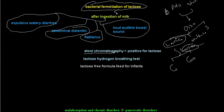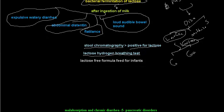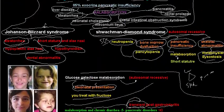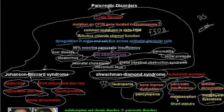To diagnose lactase deficiency: stool chromatography will be positive for lactose, and the lactose hydrogen breath test will detect carbohydrate malabsorption. Stool reducing substances will also be positive for lactose. Treatment involves giving a lactose-free formula for infants with lactase deficiency and avoiding foods containing lactose. This concludes the final video on malabsorption syndrome; cystic fibrosis will be covered in detail in the next video.